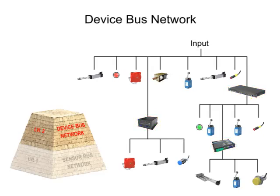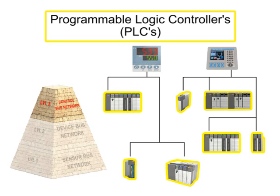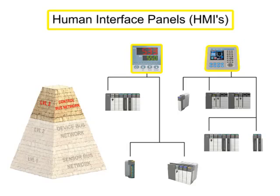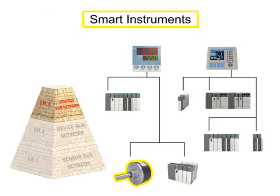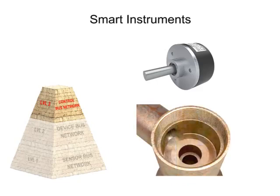Moving up the pyramid, the next increasingly complex level of fieldbus networking is the controlbus network. Controlbus networks are the most advanced networks used on the factory floor, and data communication happens at a high level. PLCs or Programmable Logic Controllers are connected to each other alongside HMIs or Human Interface Panels to allow for complete configuration and control of every instrument on the network. Smart instruments capable of performing complex operations can also be connected at this level — for instance, a smart instrument that measures wear and tear on a valve, signaling the controller when the valve needs to be replaced.